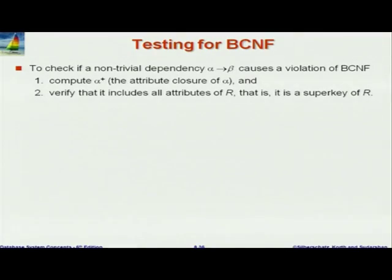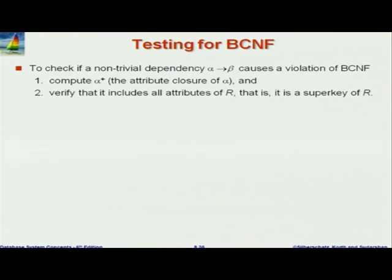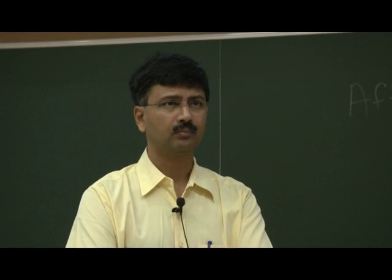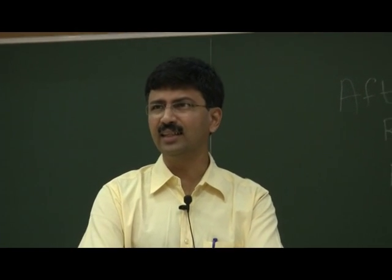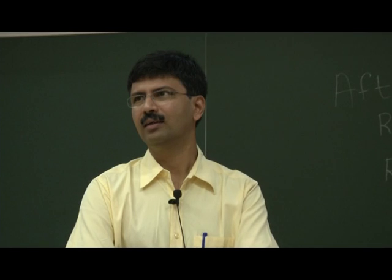Now, we come back to how do you test for BCNF? Given a relation, how do you test for BCNF? We will take each dependency. If I have a particular dependency alpha goes to beta, it's very easy to check if it violates BCNF. Compute alpha+, and if it contains all attributes, it's fine. If it does not contain anything other than itself, it's trivial — that's fine.